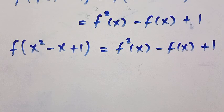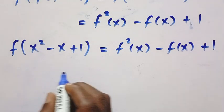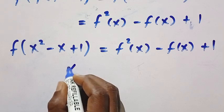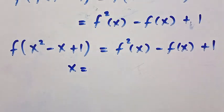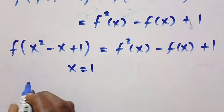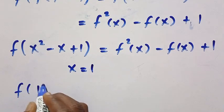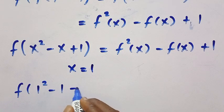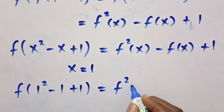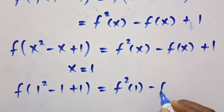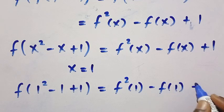So replacing it, we have f of f of x squared minus x plus 1 equals f squared of x minus f of x plus 1. At this stage, since we need f of 0, suppose I let x equal 1. Then we change every x to 1: that is f of 1 squared minus 1 plus 1 equals f squared of 1 minus f of 1 plus 1.